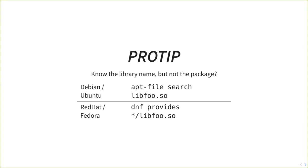If you can't find the package via command line, you can always go to the package manager websites online — they all provide a web interface to search repositories. Pro tip: if you know the library name but not the package, on Debian-based systems use 'apt-file' to search for file names. On Red Hat-based systems, use 'dnf provides' with a file glob — it will return the package names containing that file.